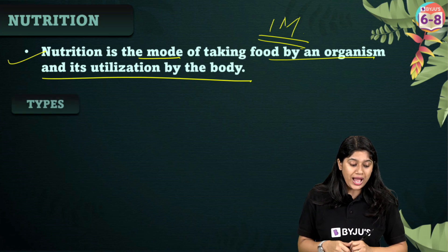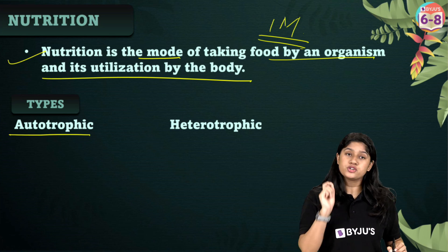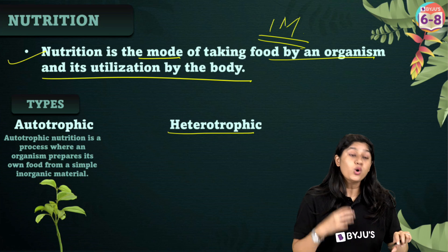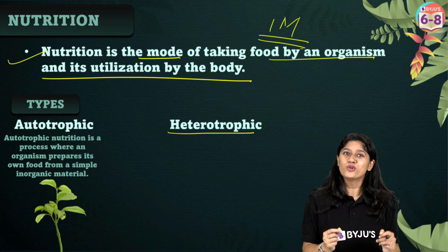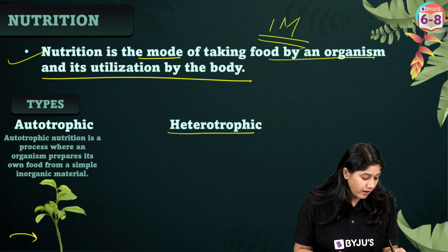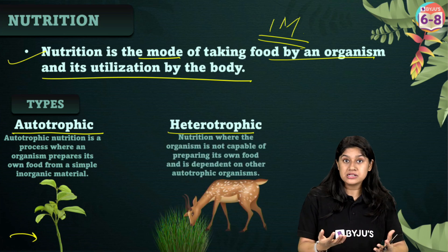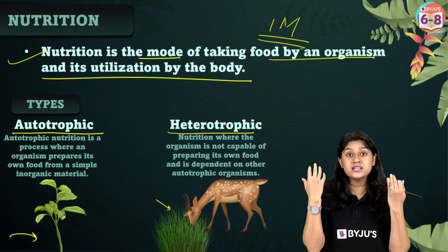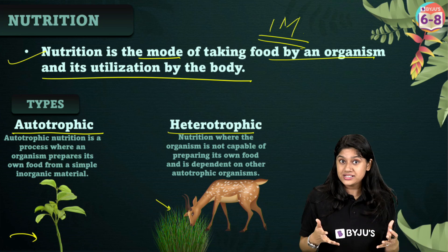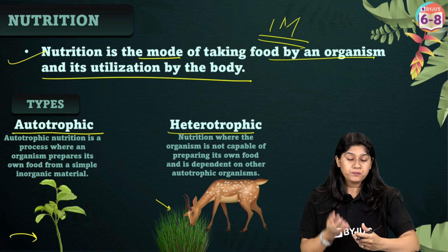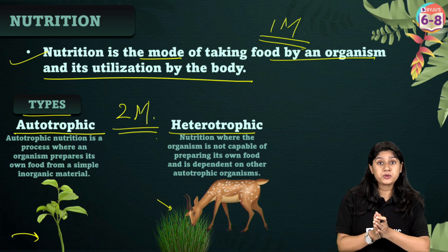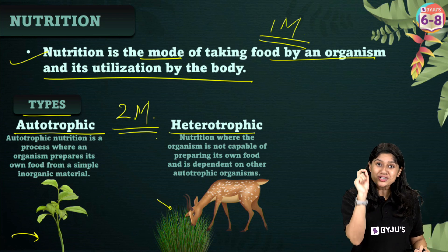Nutrition has two major types: autotrophic nutrition and heterotrophic nutrition. In autotrophic nutrition, organisms can make their own food — the biggest example being plants. Plants are called autotrophs and have the autotrophic mode of nutrition. Animals like deer and us are dependent upon others for our food, so we have the heterotrophic mode of nutrition and are called heterotrophs. The difference between autotrophic and heterotrophic nutrition is an important two-mark question.